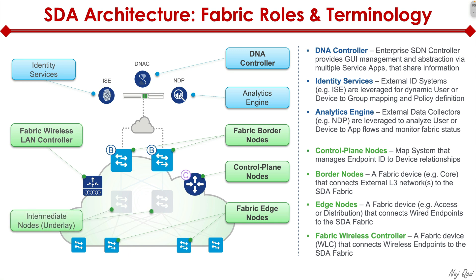Intermediate nodes are part of the underlay — think of them as the distribution layer. They do not participate in the overlay but provide physical connectivity for access layer switches to connect up to the core or fabric border nodes. In a traditional layer three design we have access, distribution, and core — this design maps to that same model exactly.